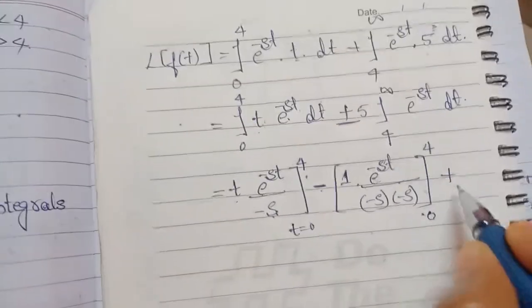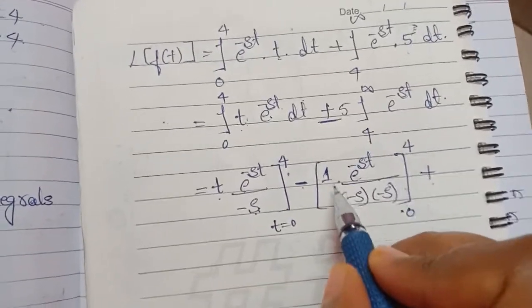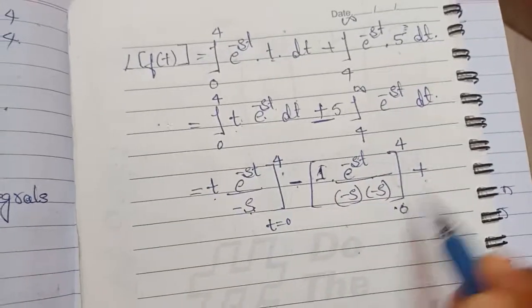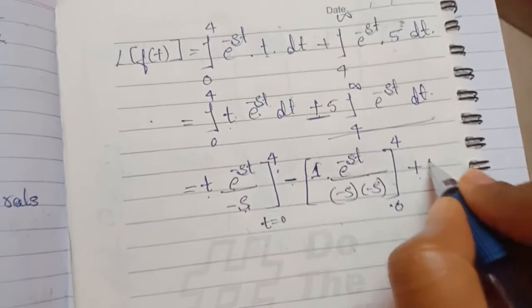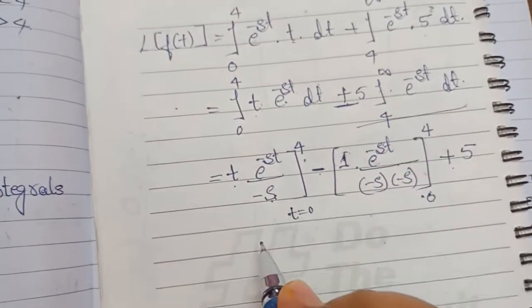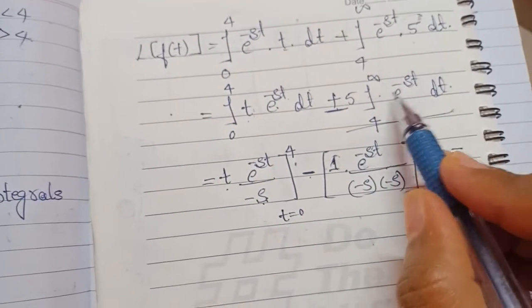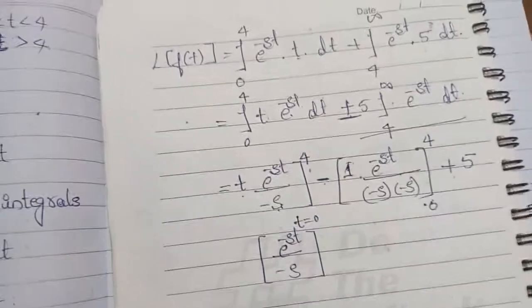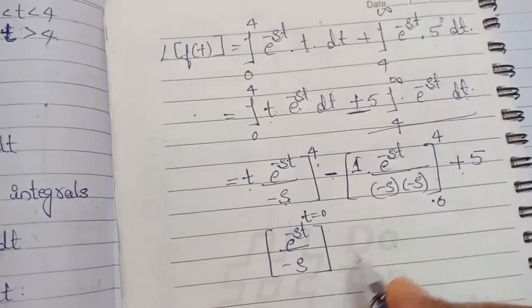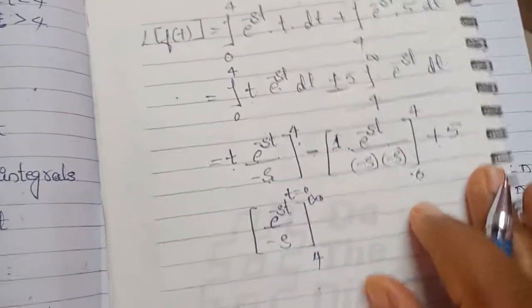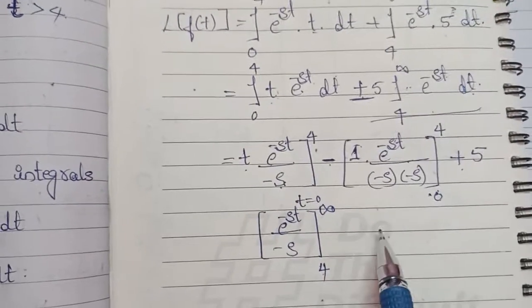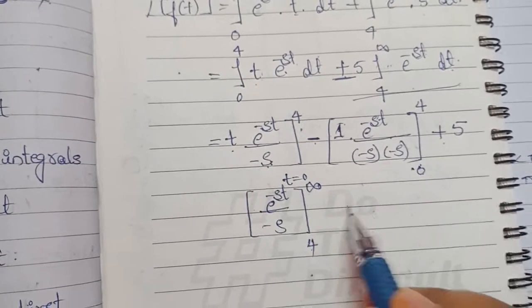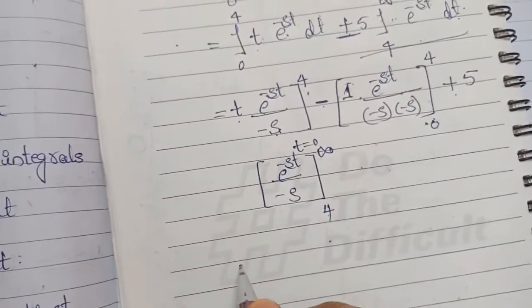The next sign is plus, but since the differentiation of 1 is 0, and 0 times something is 0, we stop here. For the second integral with 5 as constant, simply integrate e^(−st) to get e^(−st)/(−s), with limits from 4 to infinity. When we apply Bernoulli's rule to this term, differentiation of 1 is 0, so we stop after one term.